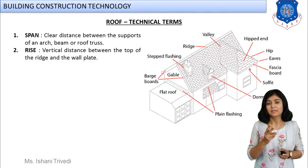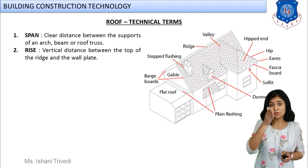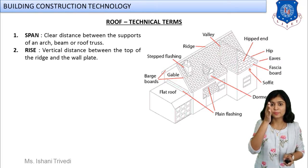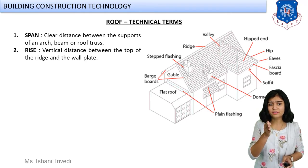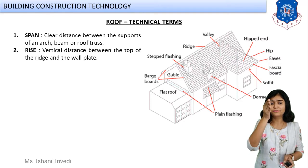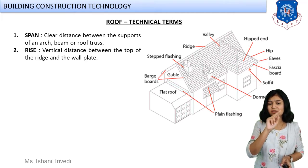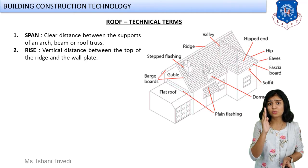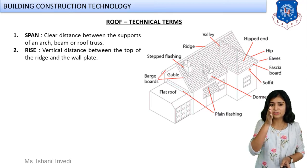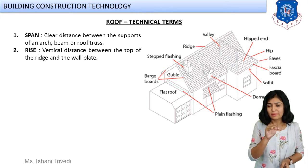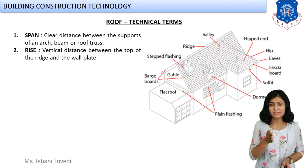Second is rise. Rise was already studied in the arch — it was the clear vertical distance between the crown and the imaginary line passing near the two supports. Same here: rise is the vertical distance between the top of the ridge and the wall plate. In arch we called it the crown; here the centerpiece of the pitch roof is called the ridge. The clear vertical distance between the top of the ridge and the wall plate where supports lie is known as rise.